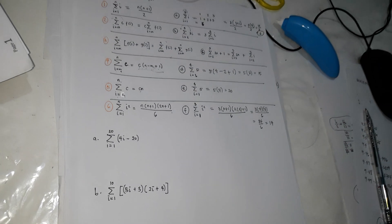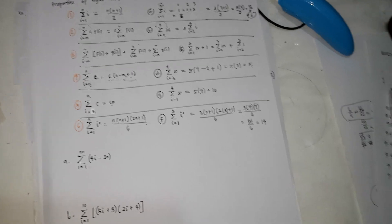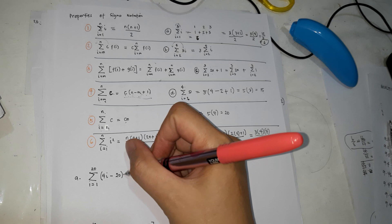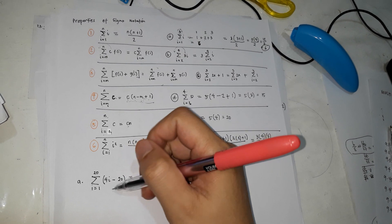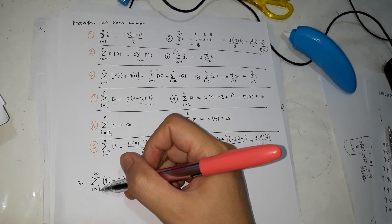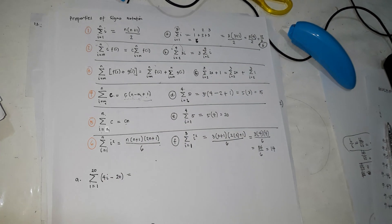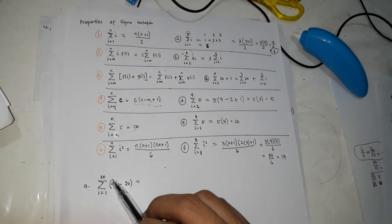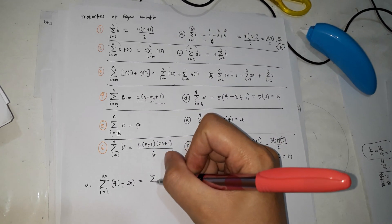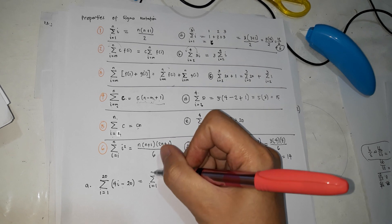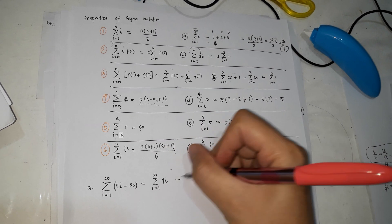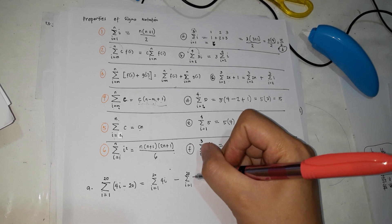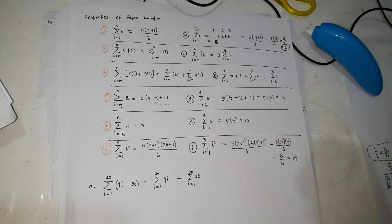We're going to use these properties para isolve pala itong given na sigma notation. So we're going to solve this. Summation of 4i minus 20 from i is from 1 to 20. So first property, pwede mo yung i-hiwalay, i-distribute yung sigma notation. So sigma notation, i is equal to 1, 20, 4i minus sigma notation, i is equal to 1, 20, 20.